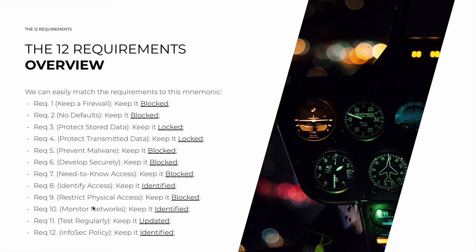Requirement 10, 'Monitoring Networks,' is 'keep it identified' — identifying actions, events, and timestamps. Requirement 11, 'Testing Regularly,' is 'keep it updated' — being updated on risk assessment, vulnerability auditing, and test results. You could argue it should be 'keep it blocked,' but the most important component of this requirement is doing it frequently, because a vulnerability scan from two years ago is not going to help you. Requirement 12, 'Information Security Policy,' is 'keep it identified' — identifying owners, roles, responsibilities, and users for every area of the organization.